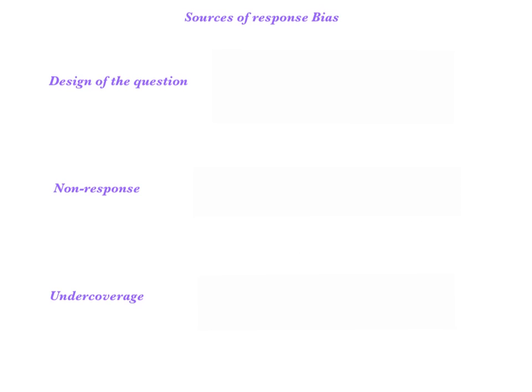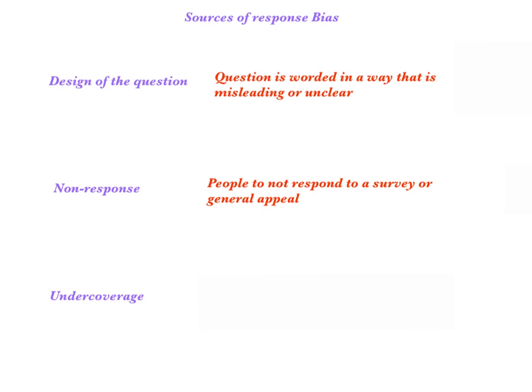Let's talk about a few sources of response bias. The first source could come from the design of your question, if you're doing some type of survey. If the question is worded in a way that's unclear, misleading, or could favor one outcome over the other, then people might be more inclined to respond one way over the other. Another source of response bias is that when you conduct a survey or question, you're not guaranteed that people are going to respond. Even if you did a lot of work to make sure the people you chose represent your population, you're not guaranteed to get that response back. Even the United States Census, which is required to be filled out, still does not get a 100% response rate.